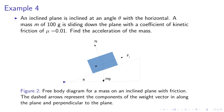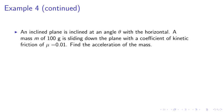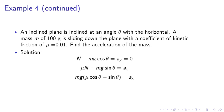The frictional forces oppose the direction of the gravitational, the component of the gravitational acceleration along the plane. The dashed arrows represent the components of the weight vector along the plane and perpendicular to the plane. Example 4 continued. An inclined plane. So we have a mass m of 100 grams sliding down the plane with the coefficient of kinetic friction of mu equals 0.01. So we're supposed to find the acceleration of the mass. We have N minus mg cosine theta equals ay equal to zero.